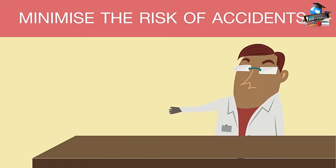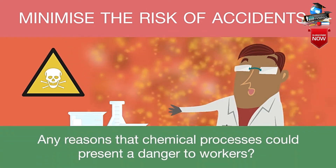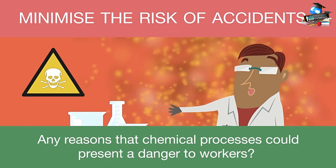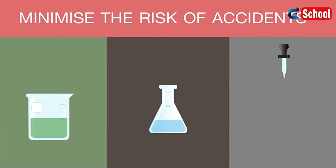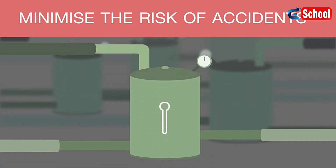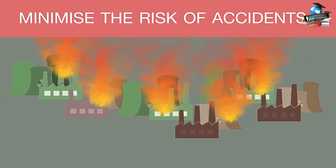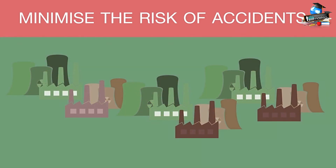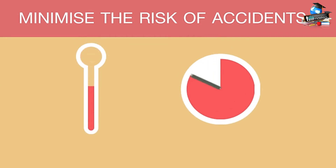Most often, chemists find themselves working with many dangerous chemicals and dangerous processes. The main reasons chemicals or chemical processes present danger are that the chemicals used could be very toxic, explosive, or corrosive. Some chemical processes also require high temperatures and pressures to produce certain chemicals, and such conditions have been known to cause fires, explosions, and serious chemical accidents at plants. Minimising the potential for accidents has been written into the mantra of green chemistry by using less harmful chemicals and reducing the amount of heat or pressure a chemical process requires.